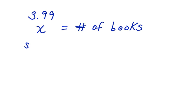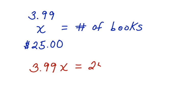We know that Jessie has $25 to spend, and that she can't spend more than $25. Now, in a previous concept, you learned how to write an equation. We could write an equation here. We could say $3.99 times the number of books equals $25.